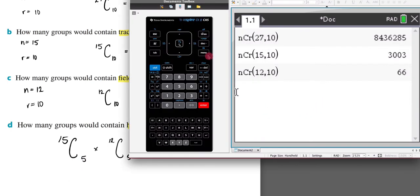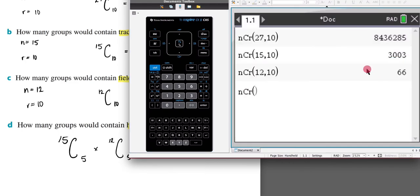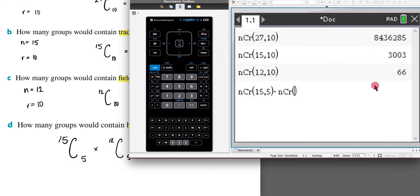So now I'm going to come over here and go menu, probability, combinations, 15 and 5, close my brackets, multiplication, and then once again menu, probability, combinations, now 12 and 5, then I'm going to hit enter and that is going to be my answer.